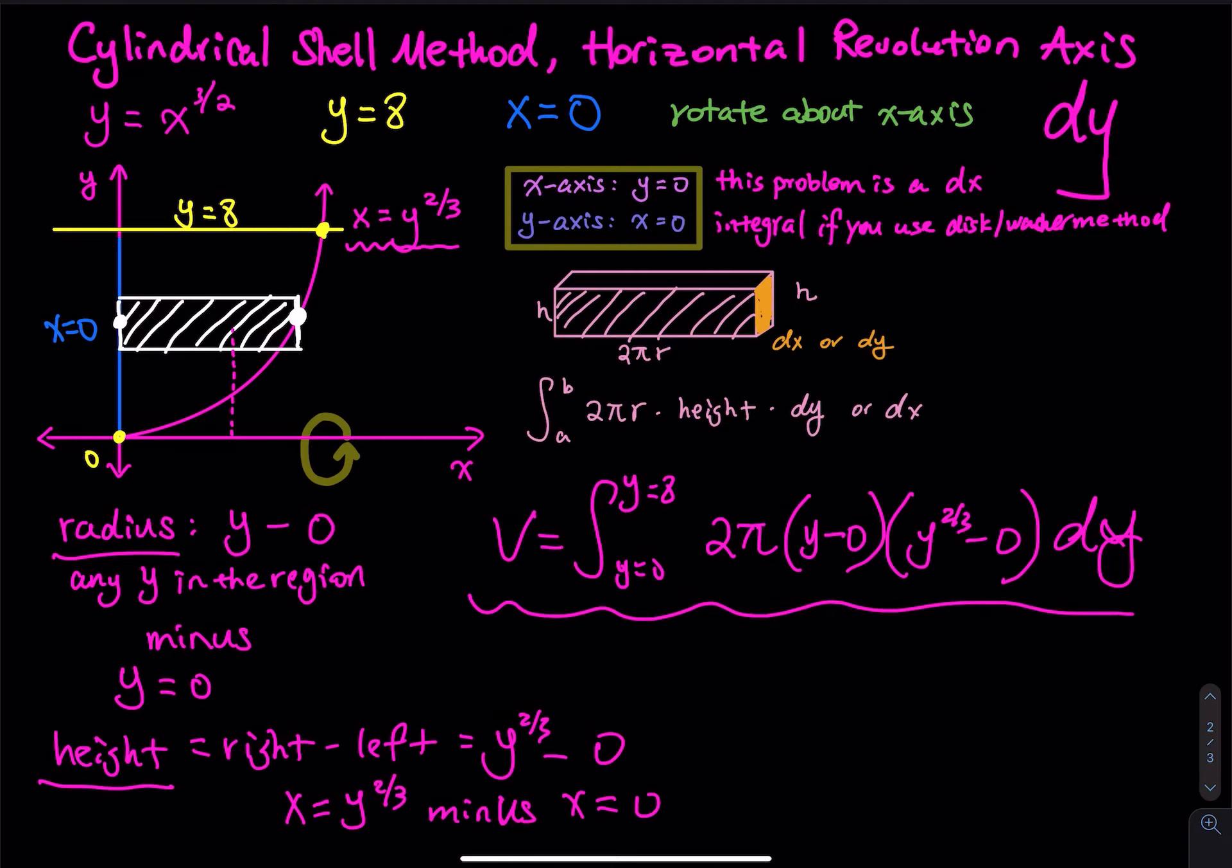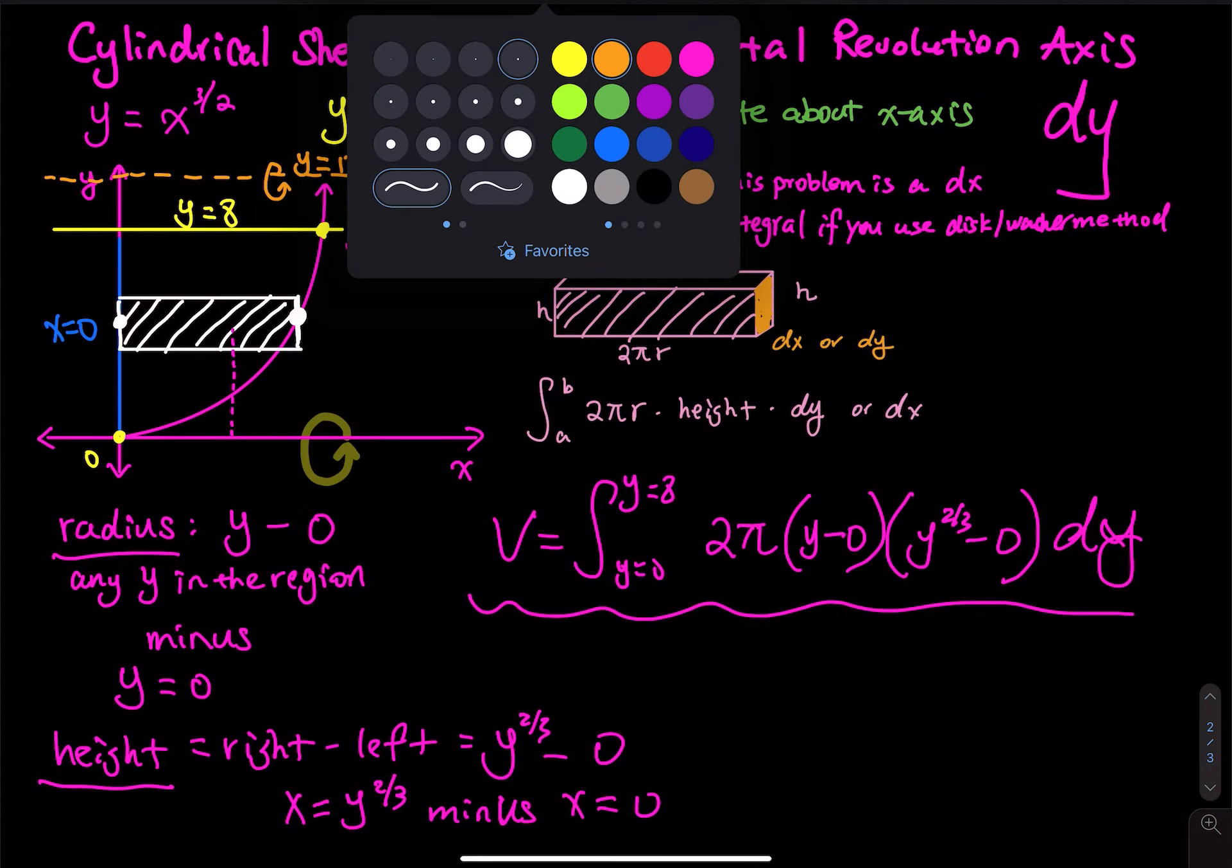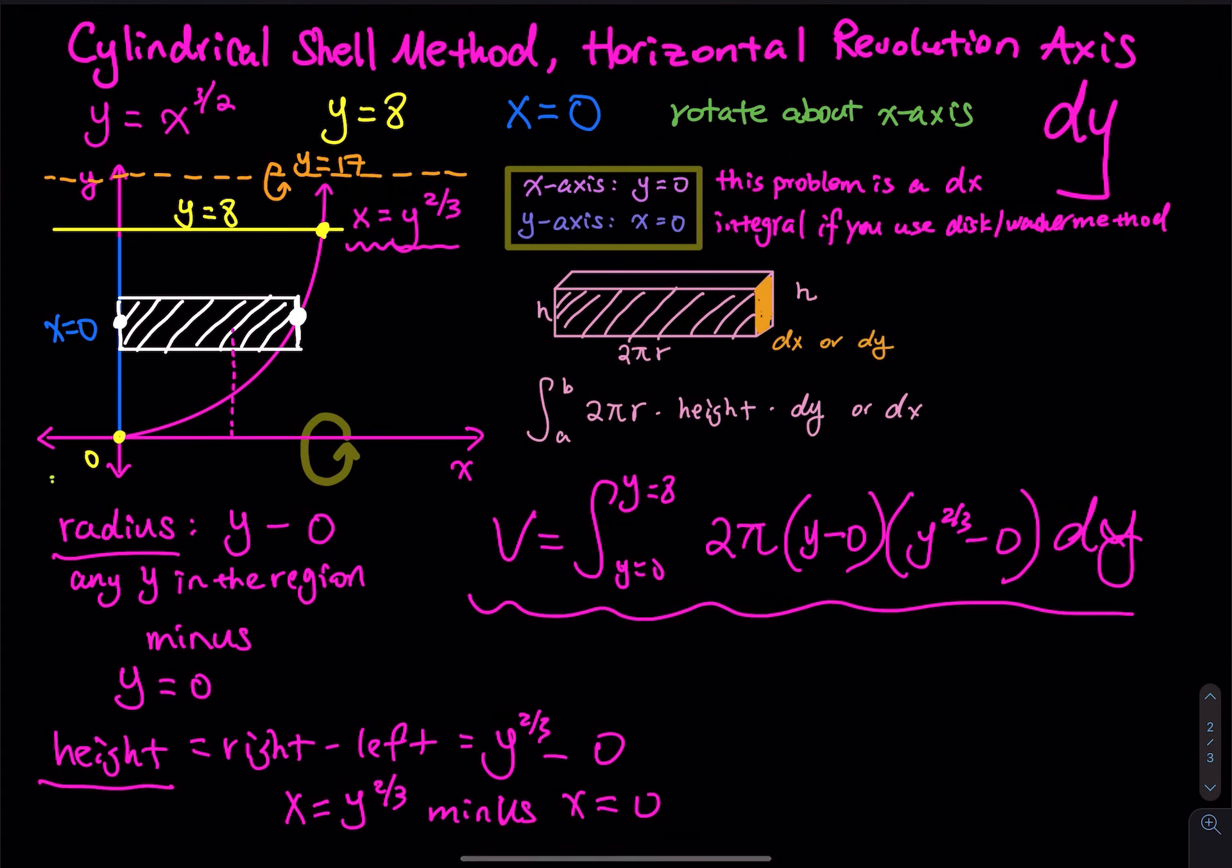And then we can do a couple what-ifs. So the first what-if that I would like to do is what if the revolution axis is right here, look at the orange dash line. So what if the revolution axis is right there? So let's say that is y equals 17. And then let's do one more. What if the revolution axis is down here? The green dash line. So that is let's say that is y equals to negative 4.